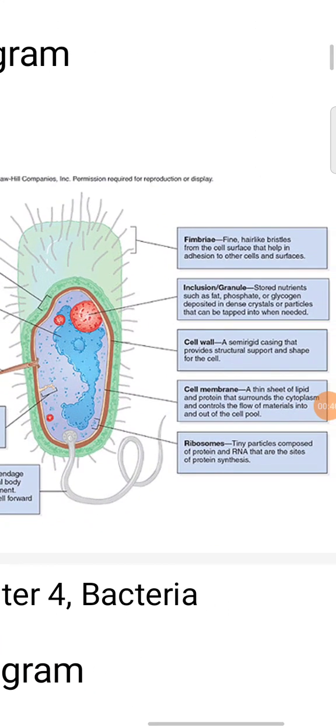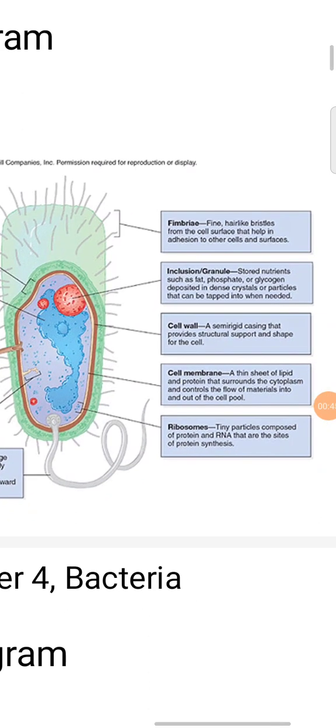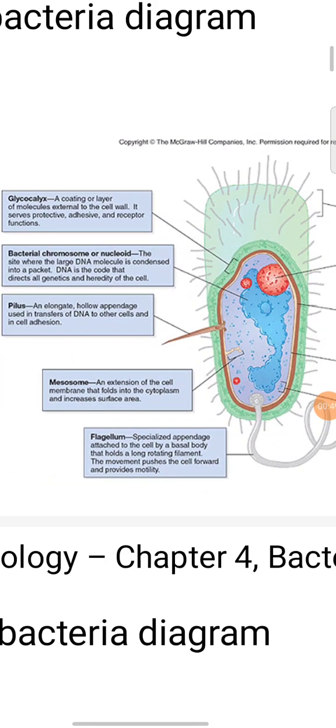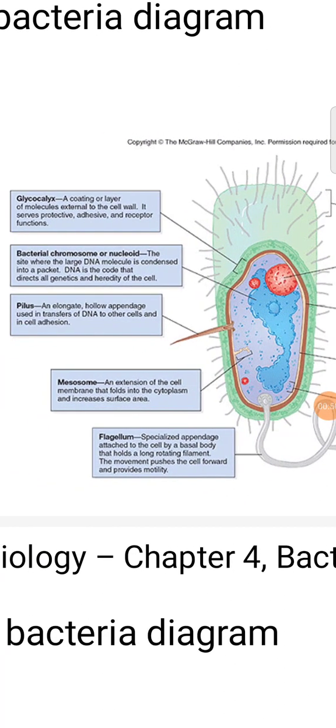Bacteria have the following components: inclusion bodies, fibrils, cell wall, cell membrane, ribosomes, flagella, mesosomes, pili, bacterial chromosome in nucleoid area, and glycocalyx. Glycocalyx is a coating layer of molecules external to the cell wall.